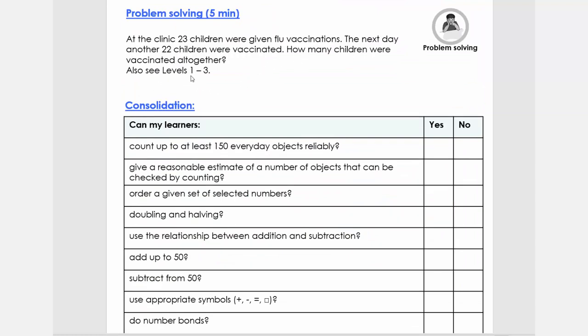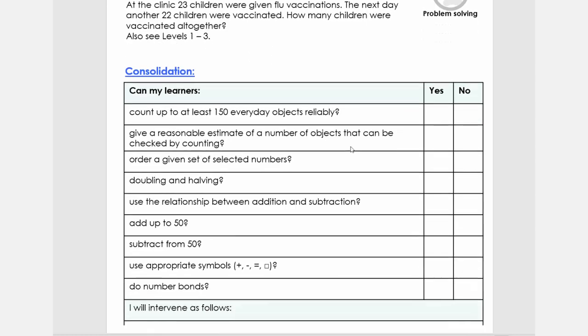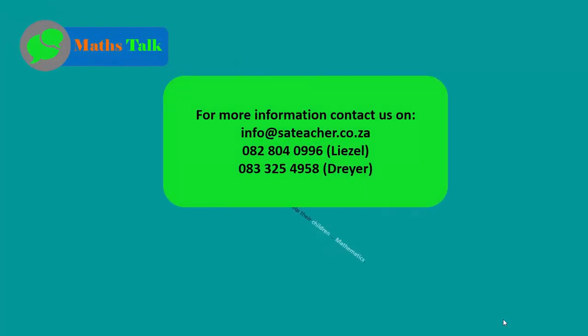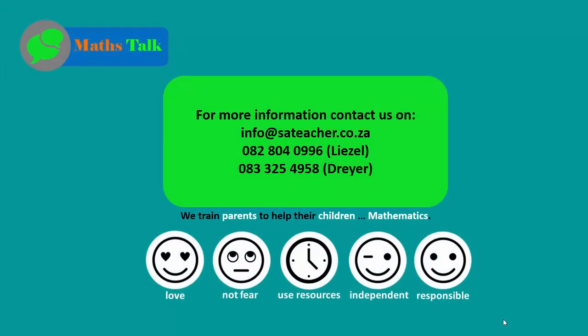And then the problem solving here again is a problem. You can also, we already done and we had to look at levels one, two, three. And then we're going to come to the consolidation. If you've got all yeses, we carry on to the next lesson. If you've got some no's, you're going to revise certain sections or questions or activities. Or you can contact us at SA Teacher. So let's go to the next lesson.